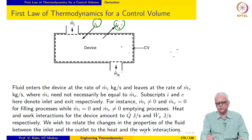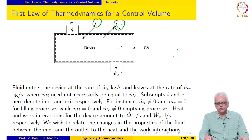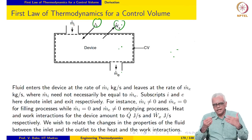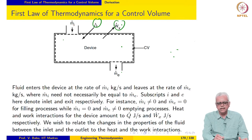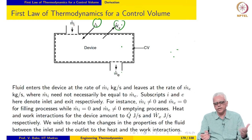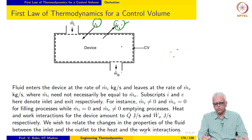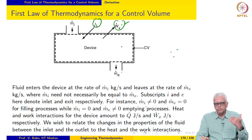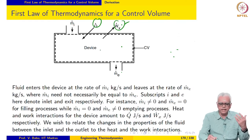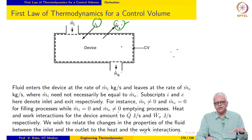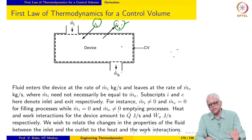Notice that the control volume is not a system clearly, because mass flows in and out, and it may not always contain the same amount of mass. Our analysis requires us to relate incoming and outgoing quantities in a way where we can evaluate one of them. However, we will have to use first law for a system, identify an appropriate system, apply first law, and then simplify it to suit our requirements for a control volume analysis.